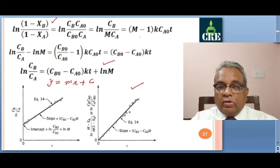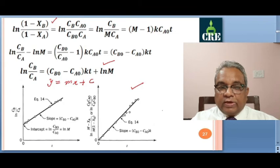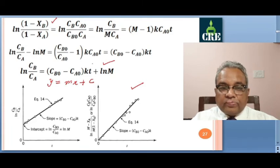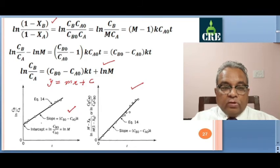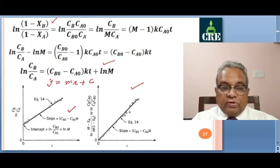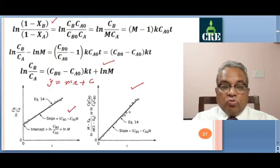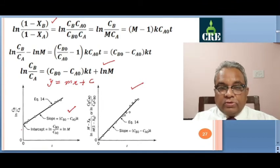Alternatively, using the Y equals mx form passing through the origin: on the Y-axis plot ln of (M minus XA) divided by M(1 minus XA) — equivalently ln(CB CA0 divided by CB0 CA) — on the X-axis plot t. The slope is (CB0 minus CA0) times k, or equivalently (M minus 1) times k times CA0. Knowing CA0 and CB0, you can find k, the second order rate constant.